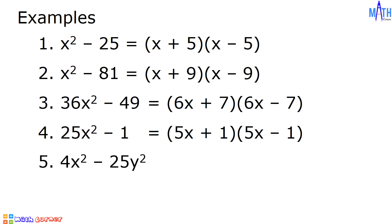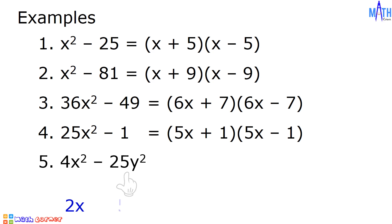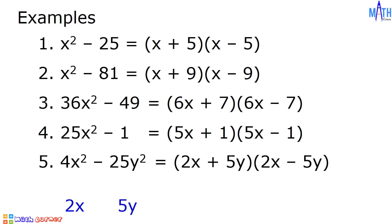Example number 5: Let us factor 4x squared minus 25y squared. Square root of 4x squared is equal to 2x. Square root of 25y squared is equal to 5y. And we have 2x plus 5y times 2x minus 5y.